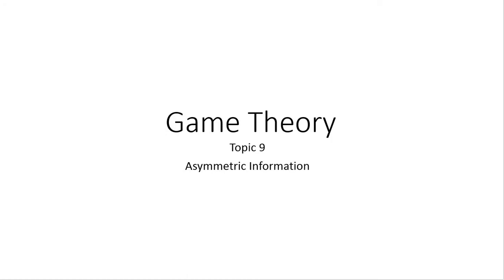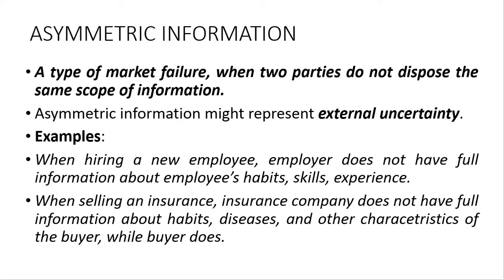In this video we're going to discuss the phenomenon of asymmetric information and how equilibrium outcomes can be achieved in games with asymmetric information. Asymmetric information can be defined as a situation when two parties do not have the same access to information. Under asymmetric information there is always a worse informed party and a better informed party. Asymmetric information represents the kind of external uncertainty.